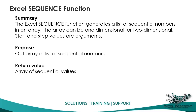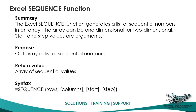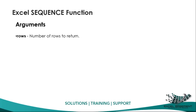The return value of this function is an array of sequential values on the spreadsheet. The syntax has four function arguments: the first one is compulsory and the remaining three are optional, as indicated by the square brackets.